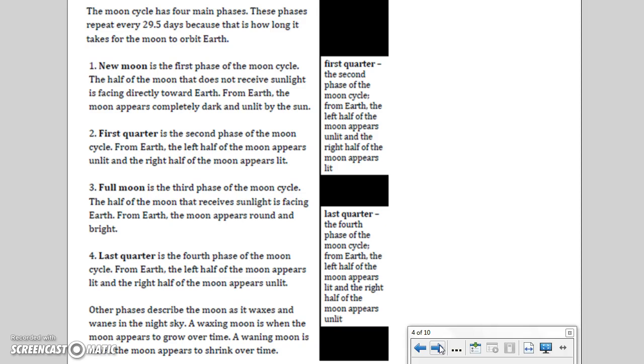Full moon is the third phase of the moon cycle. The half of the moon that receives sunlight is facing Earth. From Earth, the moon appears round and bright.